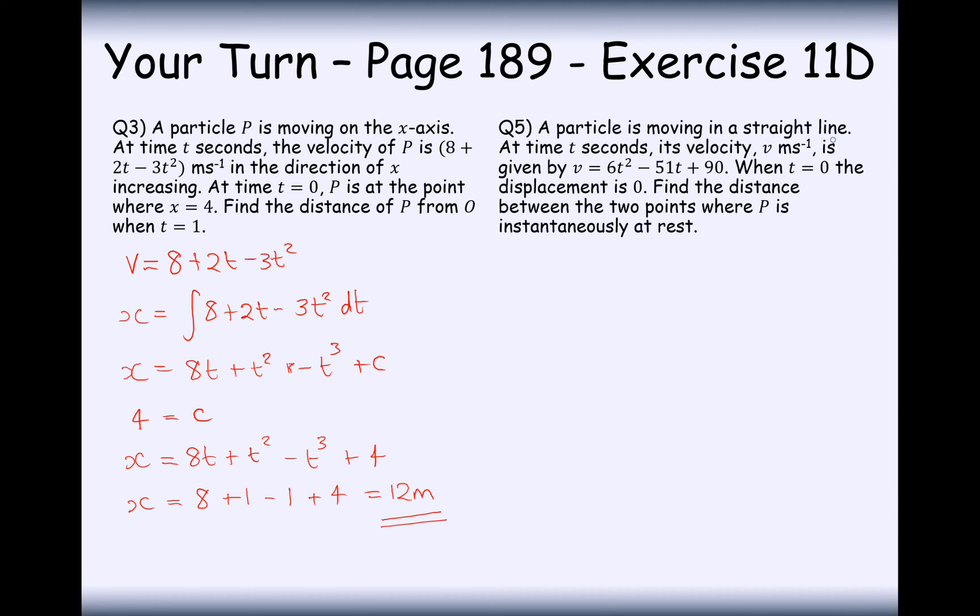Question 5. A particle is moving in a straight line at time t seconds. Its velocity, v, is given by 6t squared minus 51t plus 90. When t equals 0, displacement is 0. Find the distance between the two points where P is instantaneously at rest.